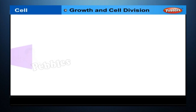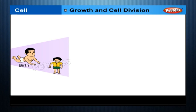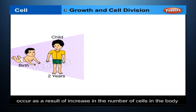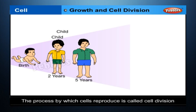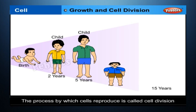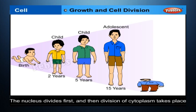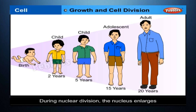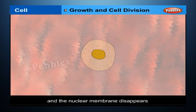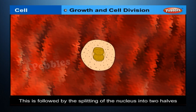Growth and Cell Division. Growth in living organisms occurs as a result of an increase in the number of cells in the body. The process by which cells reproduce is called cell division. During cellular division, the nucleus divides first and then division of the cytoplasm takes place. During nuclear division, the nucleus enlarges and the nuclear membrane disappears, followed by the splitting of the nucleus into two halves called daughter nuclei.